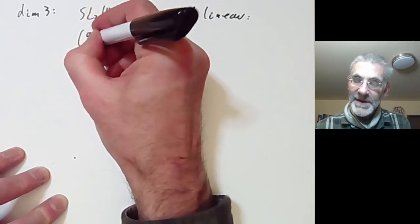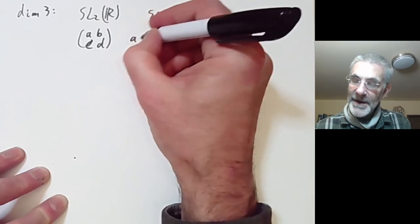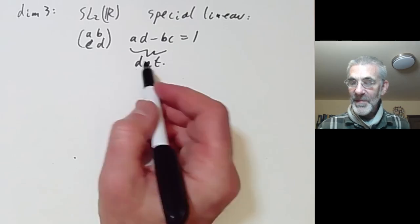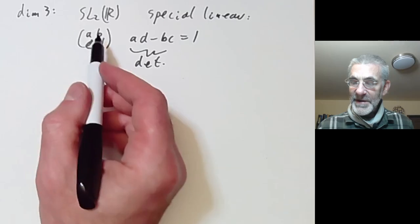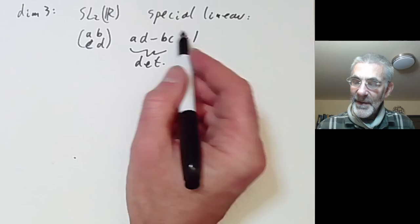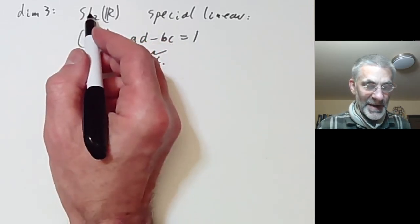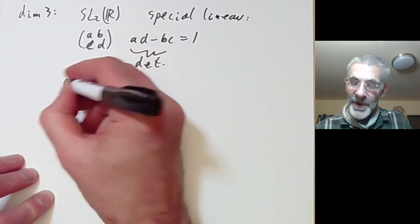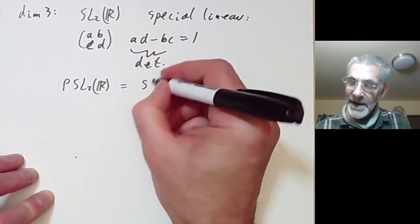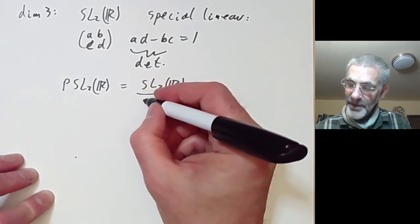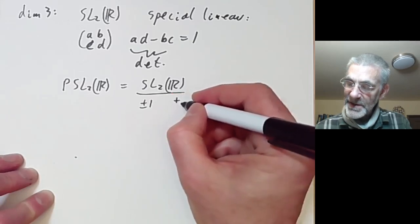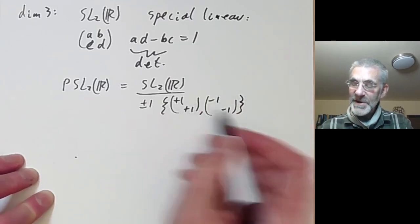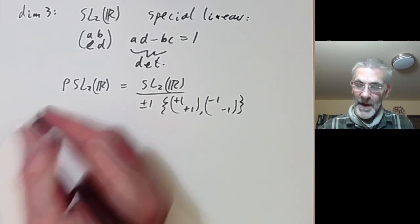Since the determinant is multiplicative, these matrices form a group. 2×2 matrices are four-dimensional; we've cut the dimension down by one by putting on the determinant equation, so SL₂(R) is dimension three. There's another closely related group: PSL₂(R), which is SL₂(R) modulo the group {±I} — i.e., the matrices +I and −I. P stands for 'projective' because it acts on projective space. This little subgroup of order two is normal, so we get a quotient.